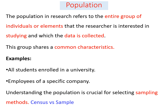First of all, the population in research refers to the entire group of individuals or elements that the researcher is interested in studying. It is a complete group of individuals or elements that the data is taken from. This group — the population — shares a common characteristic.